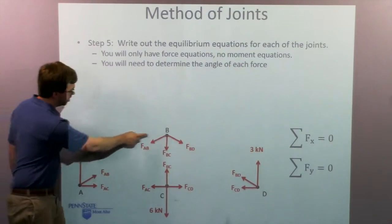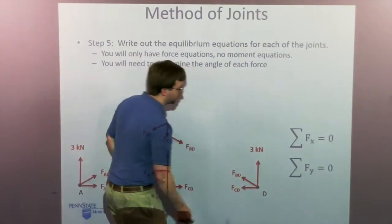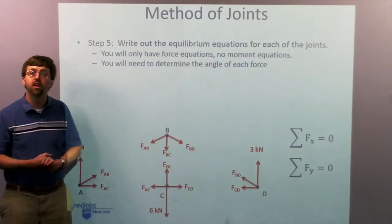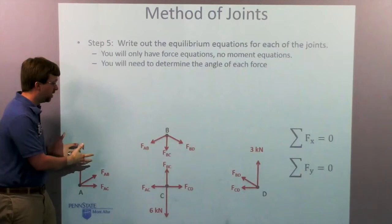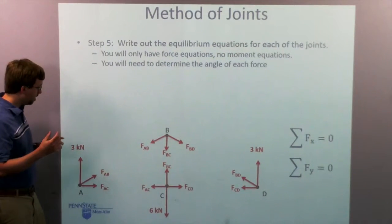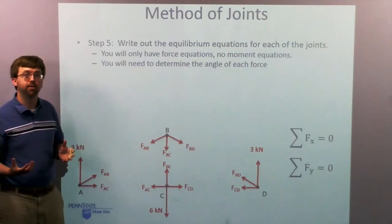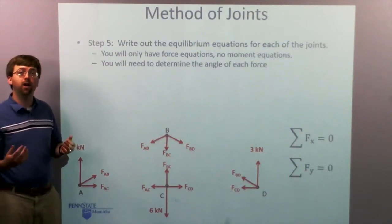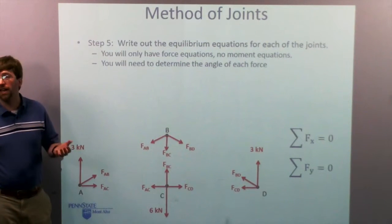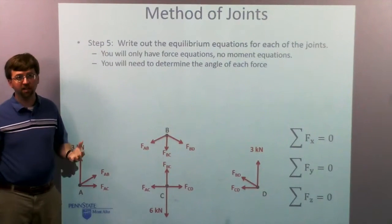So two equations at A, two equations at B, two equations at C, and two equations at D. That gives me a total of eight possible equations. And if I count up my unknowns, each member is going to give me an unknown. And I'll count this up. I've simply got five different members. So five unknowns, eight equations. I can pretty easily solve this. If I go to 3D, I would also be able to use several forces in the Z if I had something like a space truss.